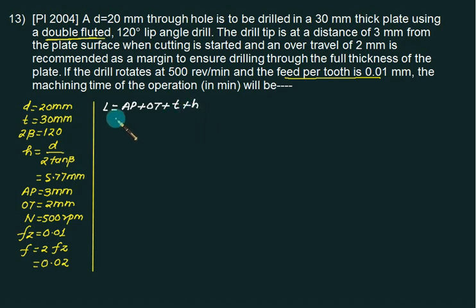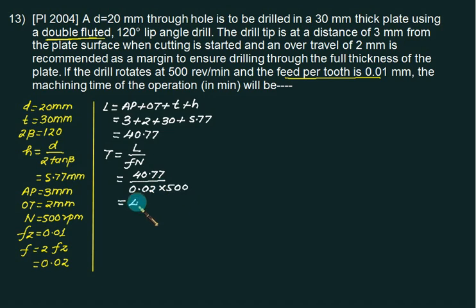Total length L equals approach length plus over travel plus T plus cone height. Approach is 3, over travel is 2, thickness is 30, height of cone is 5.77, giving 40.77mm. Time required is L upon FN, so 40.77 divided by 0.02 feed times 500 RPM is 4.077 minutes.